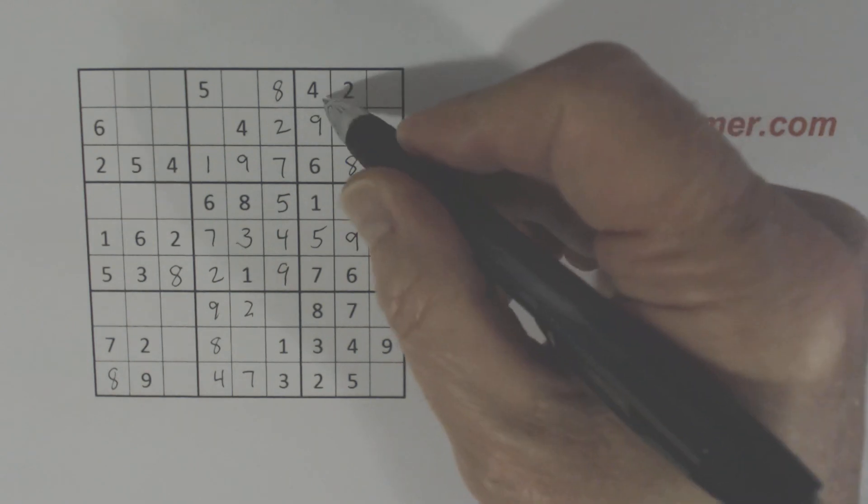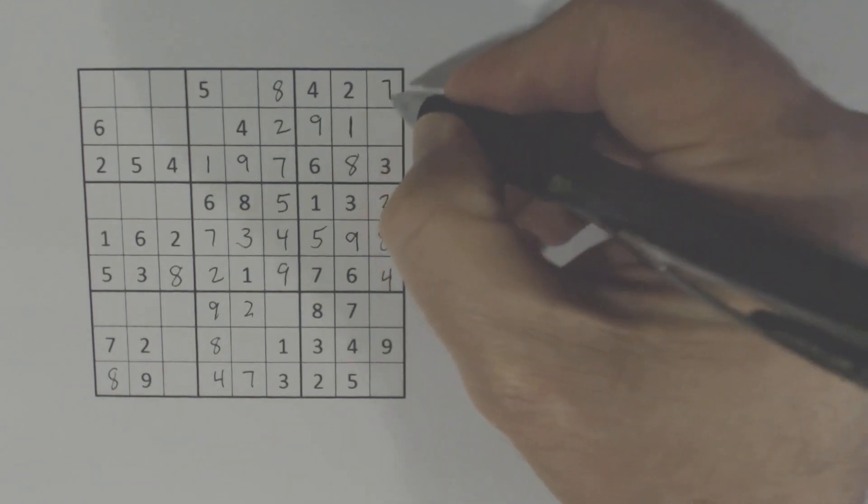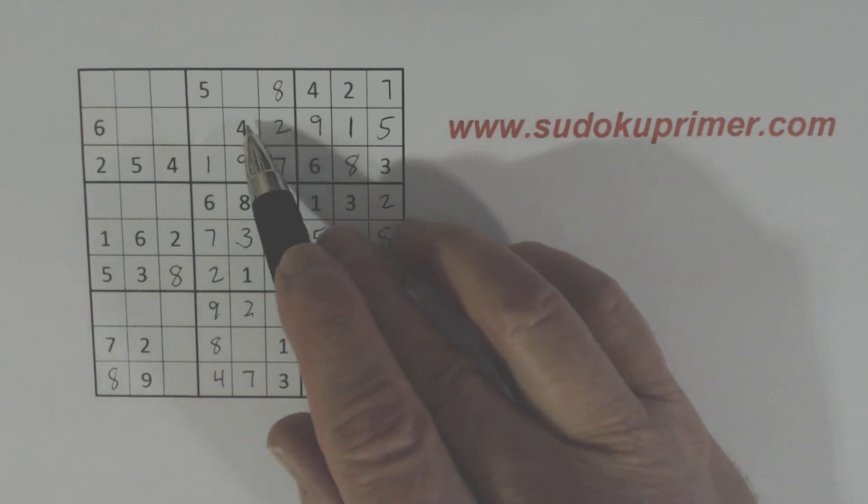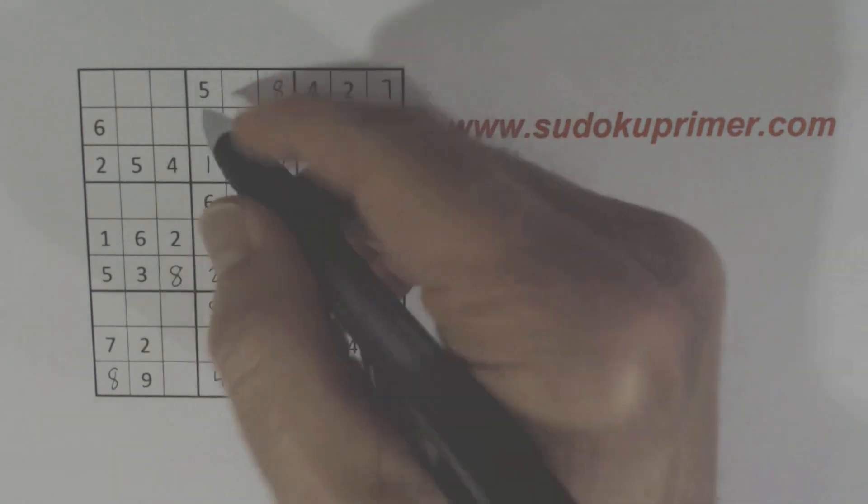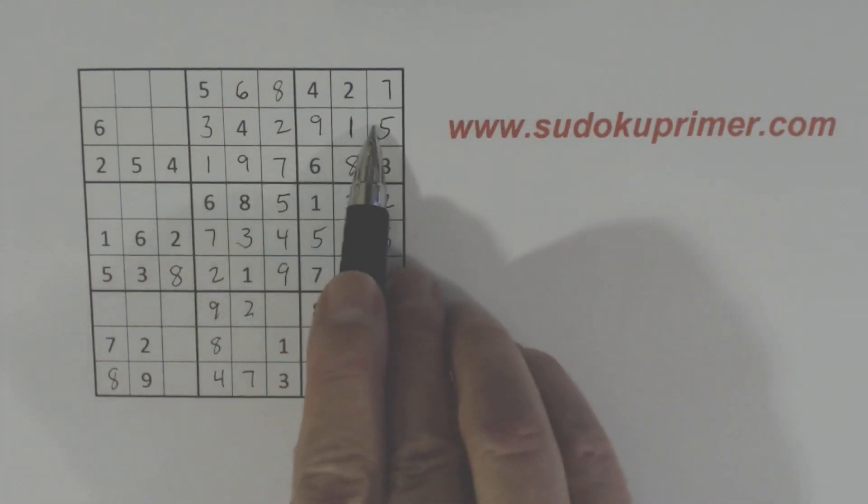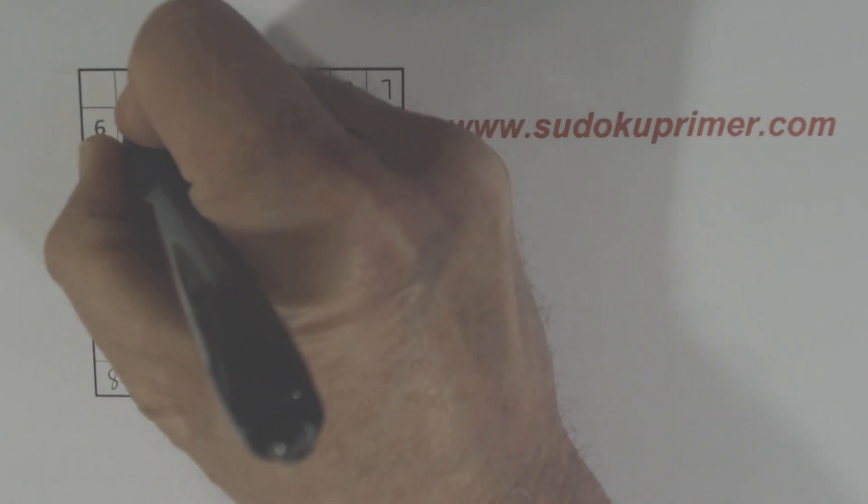Complete box 6 with an 8 there. Now we're only missing 5, 7 there in this box so we can finish those. And now we're missing 3 and 6 in this box so we can complete those. And row 2 is only missing two numbers now. So we can fill those in.